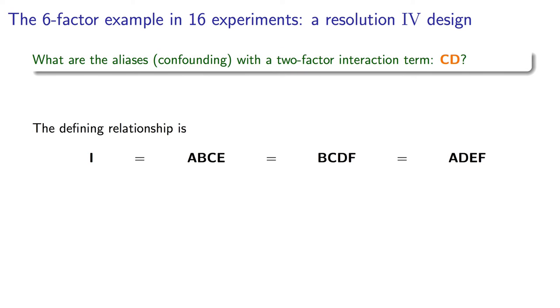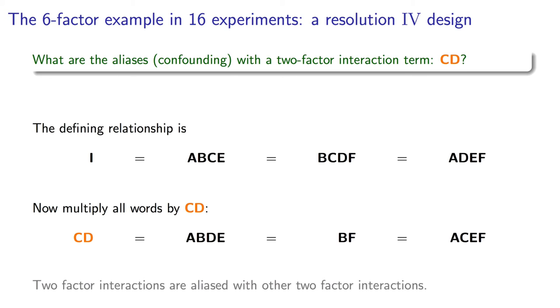What would a two-factor interaction be aliased with in this example? Try that on the CD interaction. Let's go check, CD is aliased with ABDE, is aliased with BF, and also ACEF.